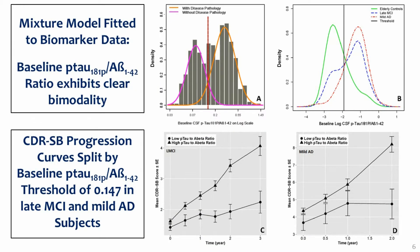A mixture model was fitted to baseline biomarker data. Panel A shows the density curves based on the mixture model with the estimated threshold of 0.147 for Ptau to Aβ ratio. The observed densities in panel B show that cognitively normal and AD biomarker distributions are quite distinct with low and high Ptau to Aβ ratios respectively.